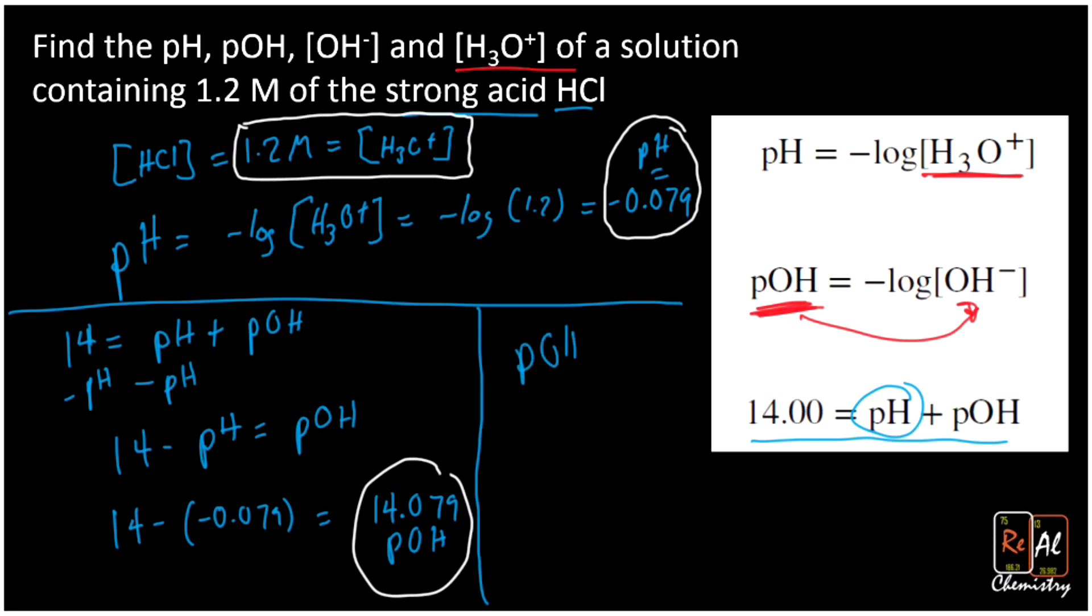Well, pOH equals negative log of my OH- concentration. The key thing here is to remember that 10 raised to both sides gets rid of my log. But I have to get log all by itself first. So I'm going to take the negative to this side by multiplying by negative one. So when I multiply by negative one, I just flip the negative sign. And now I'm going to do 10 raised to both sides.